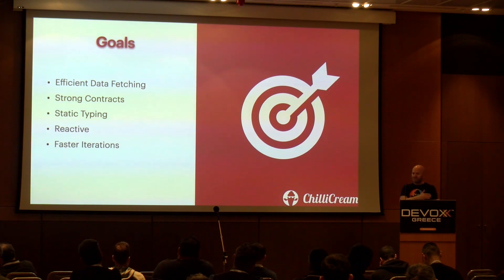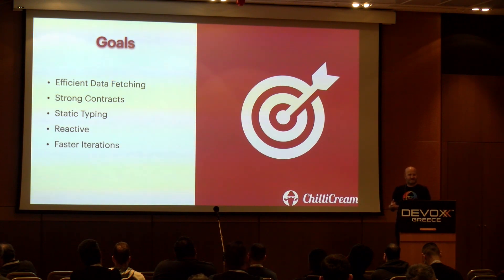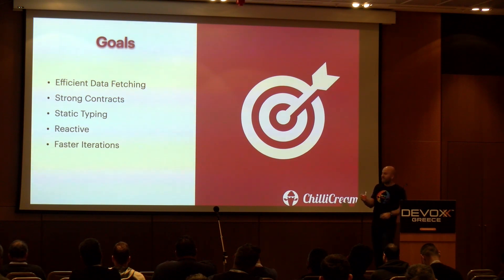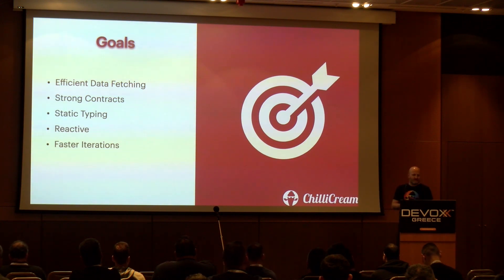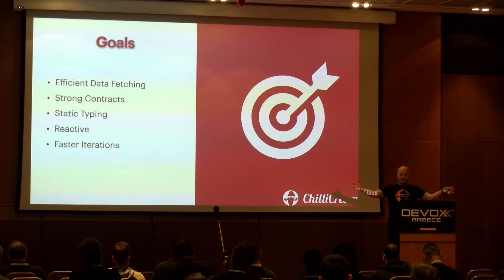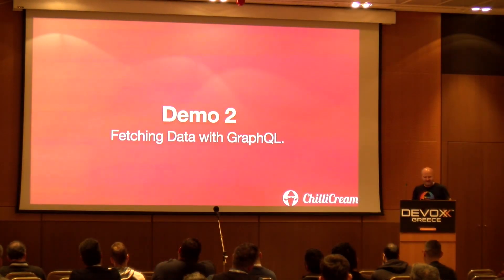A modern application is also easy to develop because backend and frontend engineers know what they're talking about — they can compile against the schema with static typing. And crucially, we get fast iterations. It's no longer the case that I need a specific request built by backend engineers. Instead, they expose the full world to me and I just pick what I need from it.